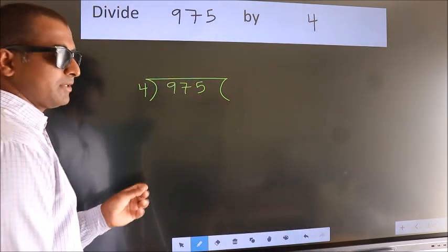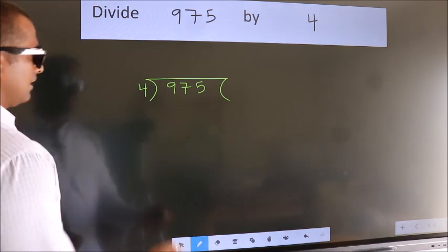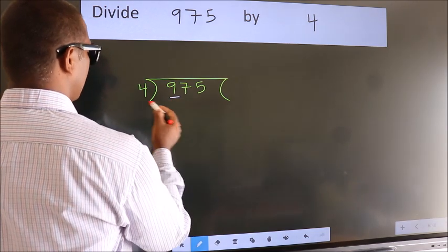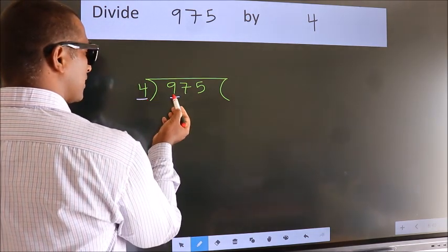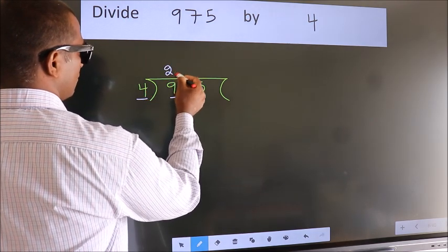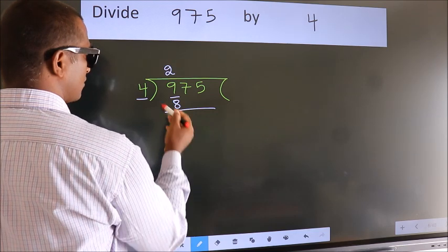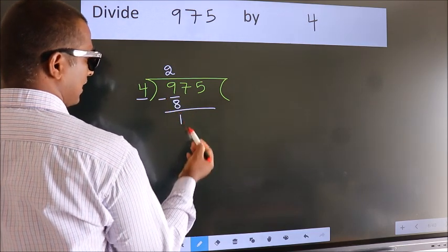This is your step 1. Next, here we have 9, here 4. A number close to 9 in 4 table is 4 twos, 8. Now we should subtract. We get 1.